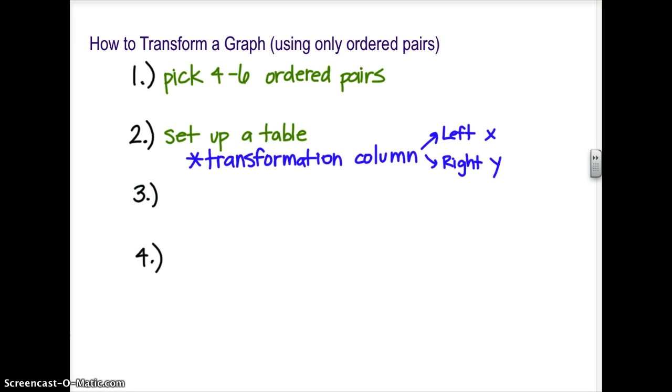Then, in that transformation column, you are going to do those transformations so that you can find new ordered pairs. Only one thing should be changing at a time. If you have two things changing, then you're going to need two columns. But you're going to have to read carefully to make sure that you need to actually change x and change y. You'll now have four new ordered pairs. Once you have those four new ordered pairs, plot it. Make it happen. You worked hard. Make it happen. Own your greatness.